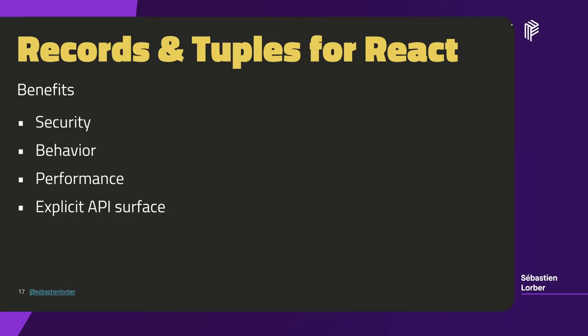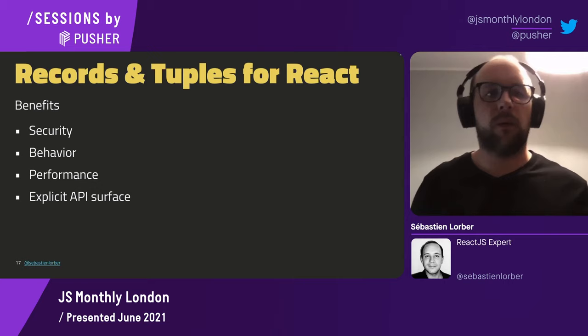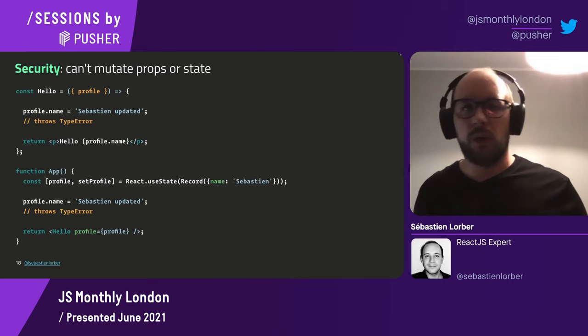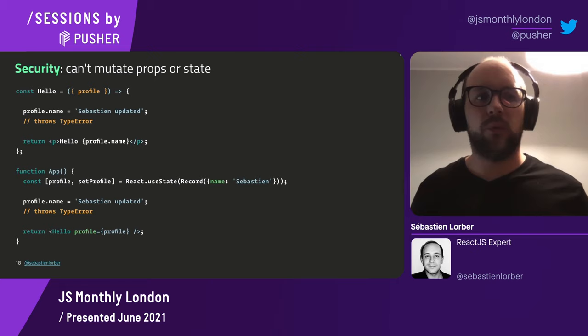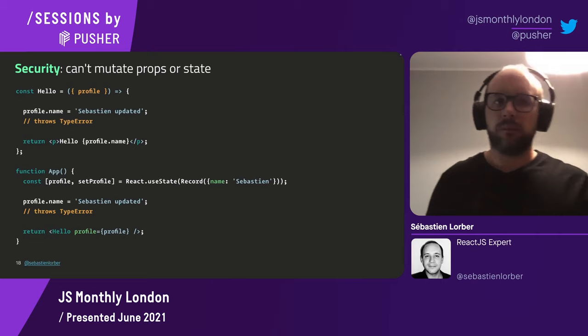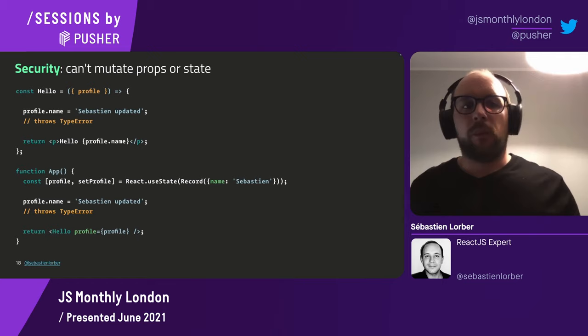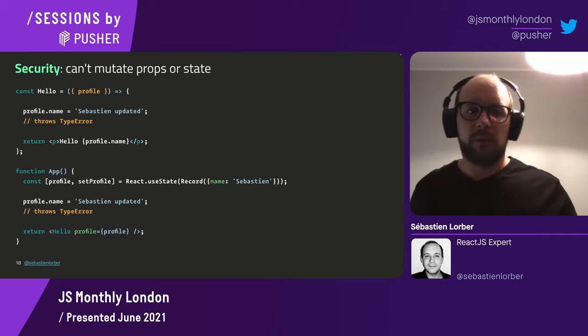Now let's talk about the benefits of records and tuples for React. I think there are many benefits — I'll explain four of them: security, behavior, performance, and API surface. On security: in React it's not good practice to mutate the props you receive. If you receive records as props, you can't mutate them — if you try to modify a profile prop's name attribute, you'll get an exception. This is already achievable today with deep Object.freeze, but it has a cost. Having it native to JavaScript is better, and it's an additional security you get for free.